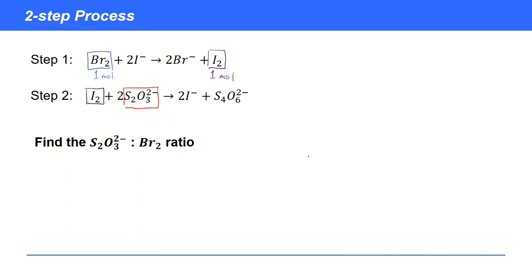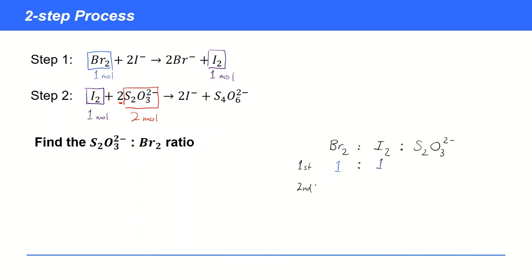We can write that out in a little table: the bromine to iodine ratio is one to one. Then we do the same thing with thiosulfate. In the second equation, we can see that two moles — because there's a balancing number of two — two moles of thiosulfate are going to react with one mole of iodine. We put that into our table as a second row. In our second step, one mole of iodine reacts with two moles of thiosulfate.